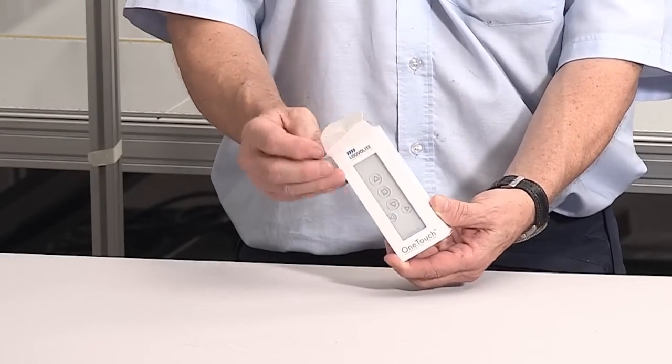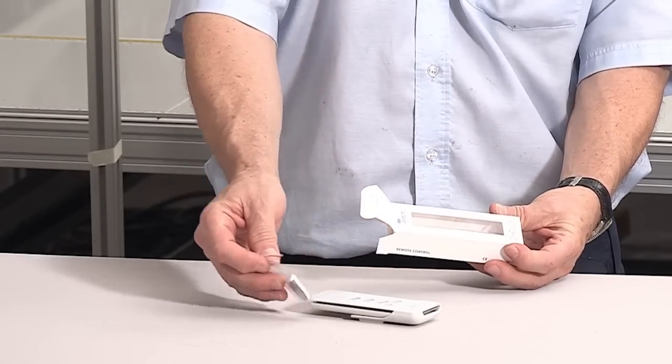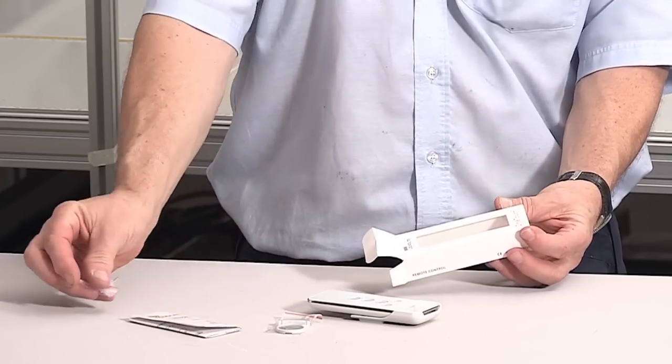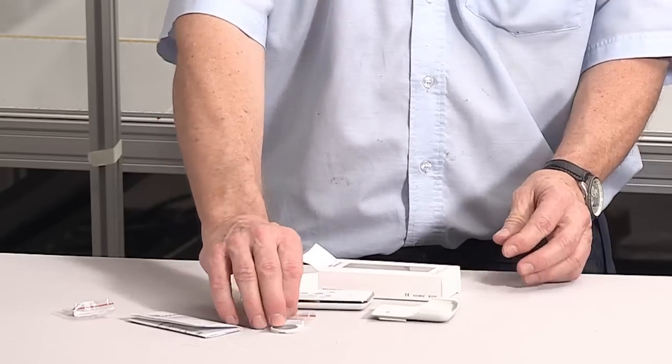The remote control pack contains one remote control and holster, one battery, one instruction sheet, and one set of screws and rawl plugs for attaching the holster to the wall.